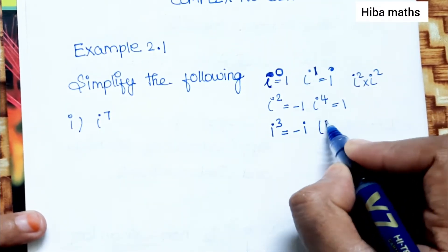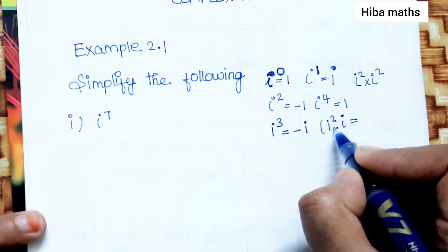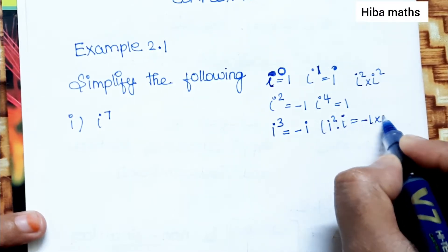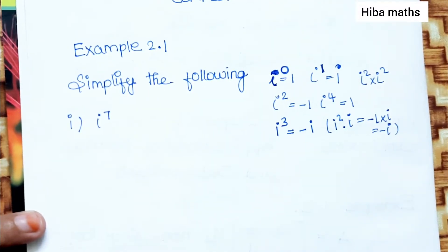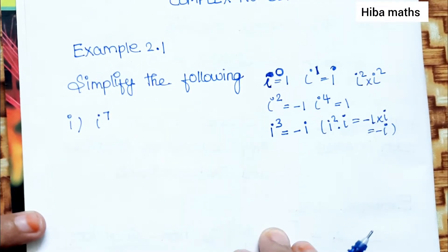Now i cube. i cube, i square into i. i square, minus 1 into i, so minus i. i power 4 into i power 3. In these terms, you will learn how to explain it. Exercise 2.1 will be very easy to solve.